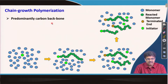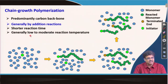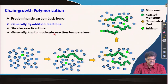Chain growth polymerization predominantly occurs for carbon backbone polymers, and generally happens by addition reactions, so no byproduct formation takes place. Because the reaction is fast, reaction time is generally short. We need the temperature to be such that the initiator gets activated, so low to moderate reaction temperatures are used. Most reactions are done in solution, so temperature is restricted by the solvent boiling point — for aqueous media, perhaps up to 70-80 degrees centigrade.